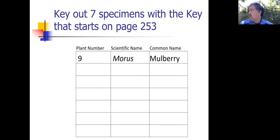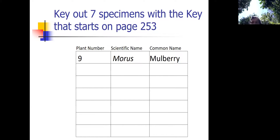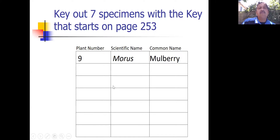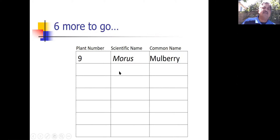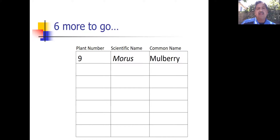I have in my backyard different plants and trees that I could classify. Take plants around you — you can number them one through seven. Use the key that is attached to the document you can access in Canvas to figure out the name of each plant.